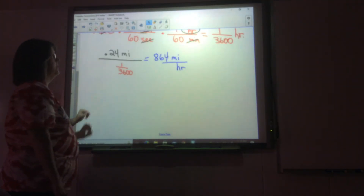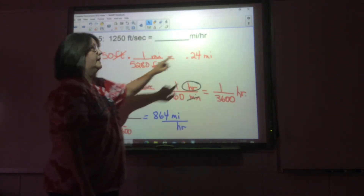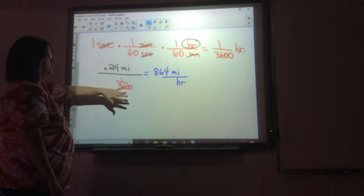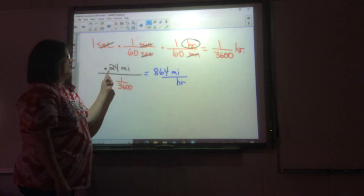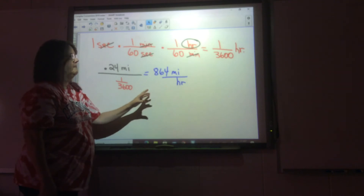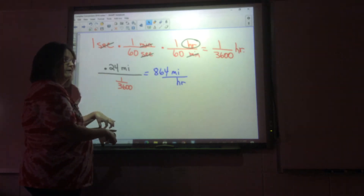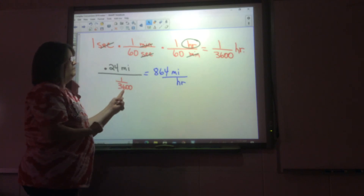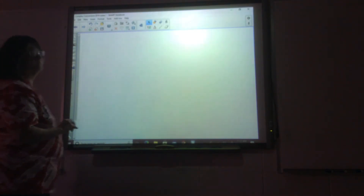Put it into your calculator: the numerator is 0.24 miles and the denominator is 1 over 3,600. Hit your fraction button, put 0.24 in the numerator, then in the denominator hit the fraction button again and put 1 over 3,600 in there. That gives you 864 miles per hour.